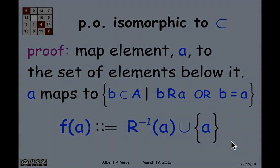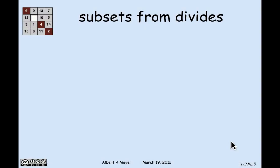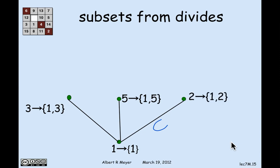And let's just illustrate that by the example of how do you turn the divides relation into the subset relation. Well, the smallest element in the proper divides example was the number 1. And I'm going to map it to the set consisting of 1, which is all of the elements that properly divide 1 along with 1. And then I'm going to map the number 3 to all of the elements that properly divide 3 along with 3. And that is 1 and 3. 5 maps to 1 and 5. 2 maps to 1 and 2.